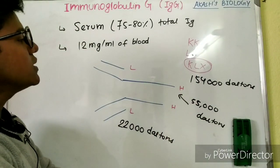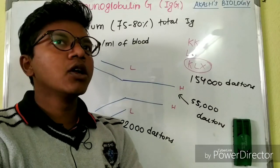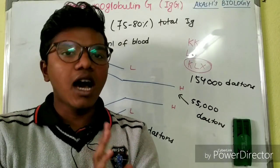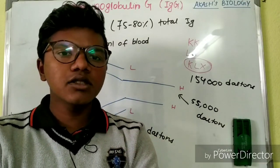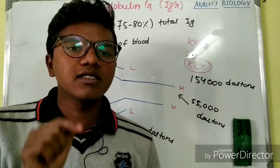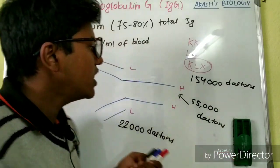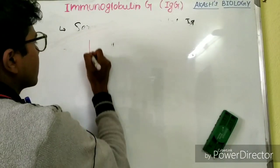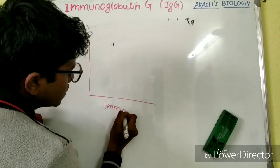Regarding the secretion and function of immunoglobulin G: whenever we encounter any infection, the first immunoglobulin to arrive at the site is IgM. If asked which immunoglobulin arrives fastest to encounter the antigen, it is IgM. IgM takes seven to eight days to come to the site of action. The key point about IgM is it comes early and fades early. From a graph perspective, when a person has an infection, the level of IgM rises first.